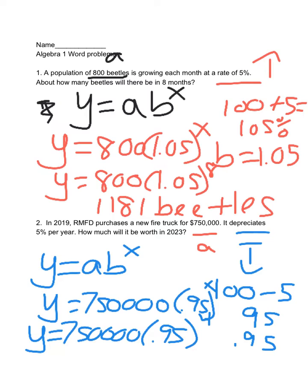Then type this in, so 750,000 times 0.95 to the 4th. It'll be worth $610,879.69. We're talking about money, so I'm going to round to the nearest hundredth.